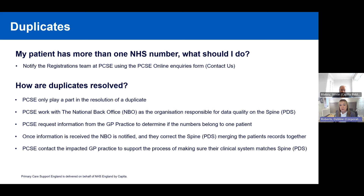Resolving a duplicate case is very similar to confusions. PCSE gathers as much information as possible to provide evidence to the National Back Office that two NHS numbers definitely relate to the same person. This can be challenging when there are different dates of birth, different genders, or different names — clarification is needed to avoid merging records that could actually belong to two different people. Once PCSE has the information, the National Back Office will merge the two NHS numbers together if satisfied they relate to the same individual.